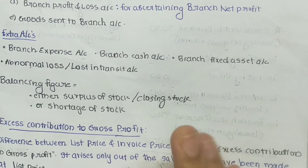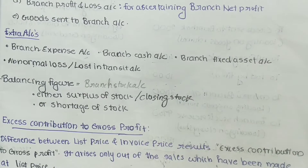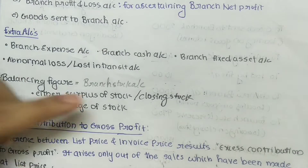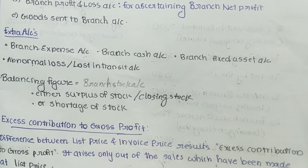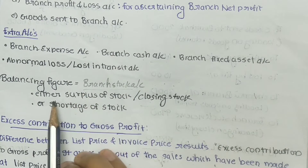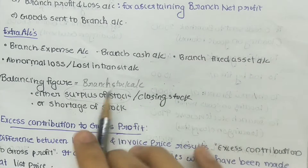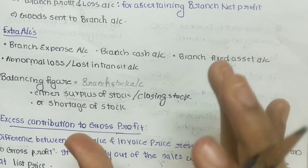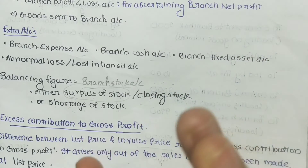Regarding the balancing figure of the Branch Stock Account: if the closing stock is not given in the question, then the balancing figure of the Branch Stock Account will be the closing stock. If closing stock is specified in the question, then the balancing figure will be either a surplus of stock or a shortage of stock. Surplus appears on the debit side, and shortage appears on the credit side of the Branch Stock Account.